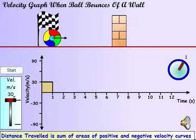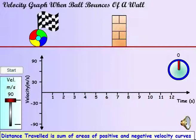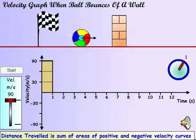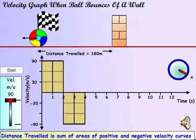Velocity is a vector. Note that after bouncing off the wall, its sign changes. As the ball travels towards the wall, the velocity-time graph is positive. After the ball rebounds and changes direction, the velocity-time graph is now negative. If you add the areas before and after rebound, they give you the distance. If you add the areas considering the area after rebound as negative, the total area will be zero. This is the displacement.